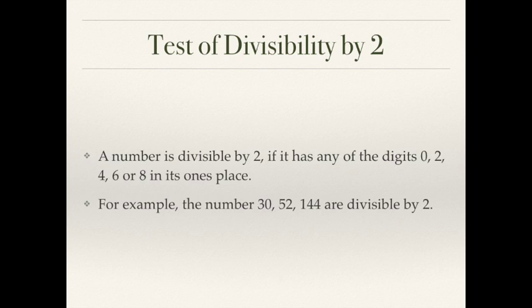Let's start with divisibility by 2, the simplest one. A number is divisible by 2 if it has any of the digits 0, 2, 4, 6, or 8 in its one's place. When there is a number, you see the last digit — the digit in the one's place — and if that digit is 0, 2, 4, 6, or 8, then the whole number, even if it's very big, will be divisible by 2. For example, 30, 52, and 144 are all divisible by 2 because the digits in the one's place are 0, 2, and 4 respectively.